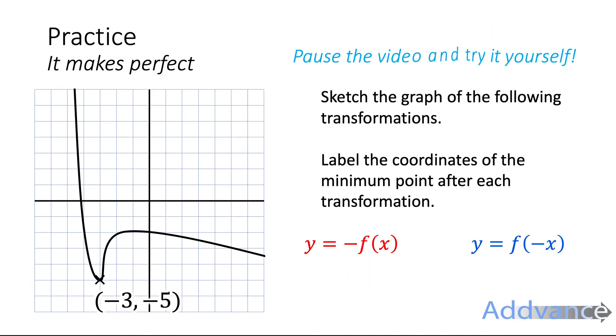If you're ready, you can try these practice questions. But if you'd like to watch it one more time before you do, rewind the video yourself. Sketch these graphs on pen and paper. You might want to even screenshot this and print it out yourself so you can draw it properly. Label the coordinates of the minimum point after each transformation. So we're going to do y equals minus f of x and y equals f of minus x. Make sure you get it the right way around.